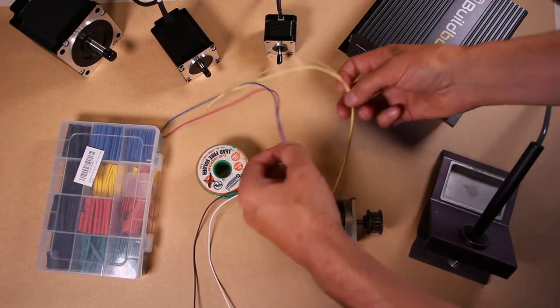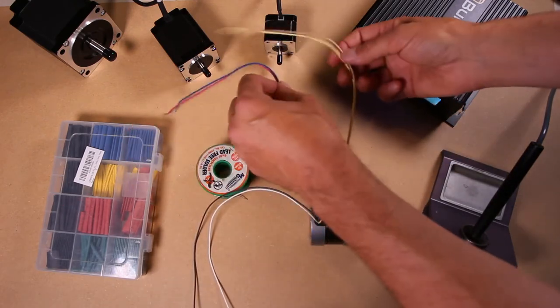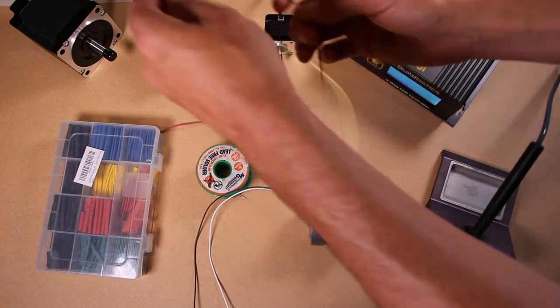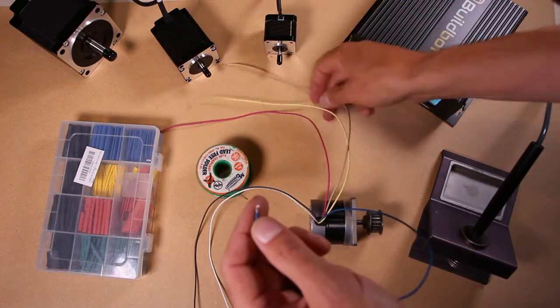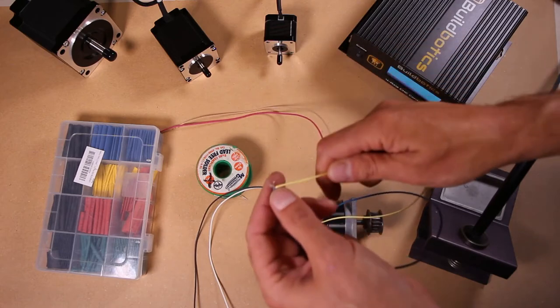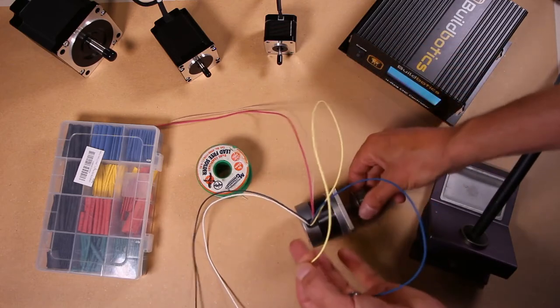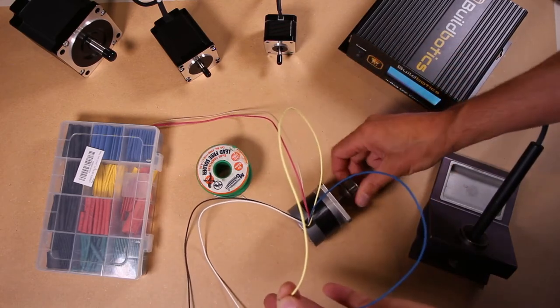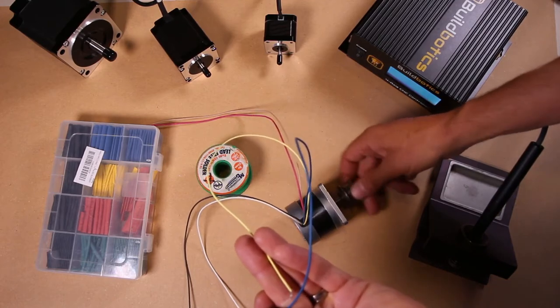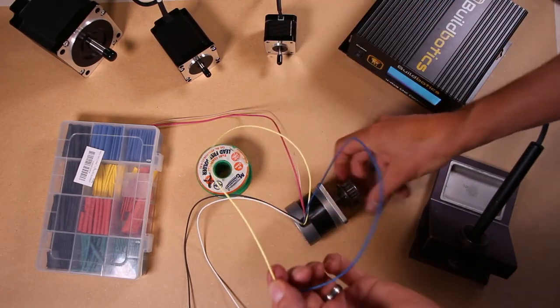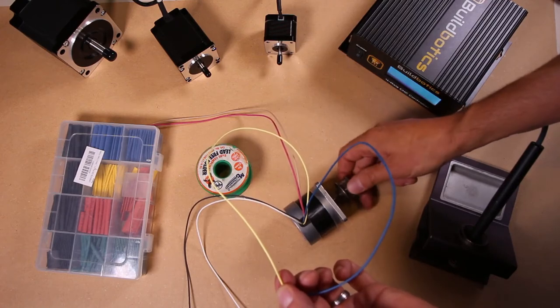Then I believe the coils were between blue and yellow. But I can double check this by connecting together and turning it. Sure enough, you can hear the difference. Smooth. And when the wire is connected, it sticks.